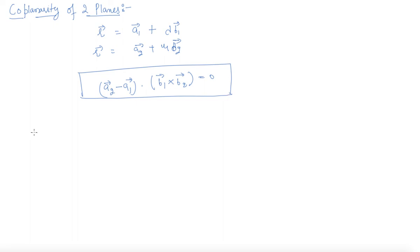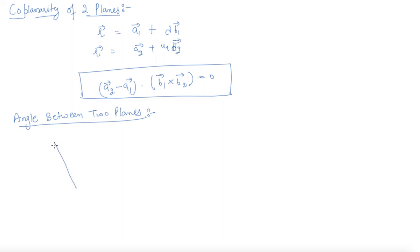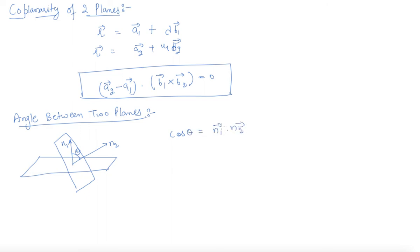Now, the angle between two planes. These are simple formulas, just similar to the lines that we have discussed, so I am not giving the full derivation. Let us say there are two planes, and the angle between these two planes means the angle between the normals of these planes. Let us say the normals are n1 and n2. The angle theta between them is given by cos θ = (n1 · n2) / (|n1| |n2|).